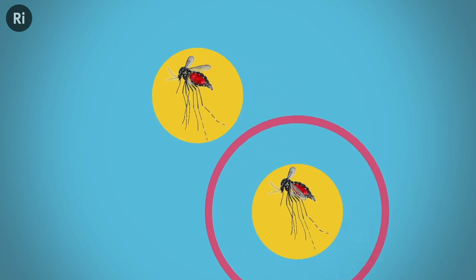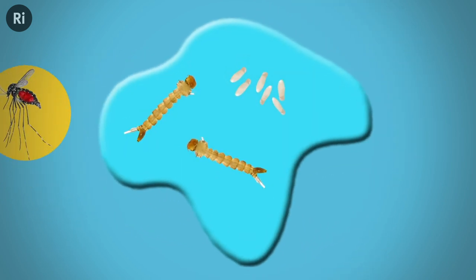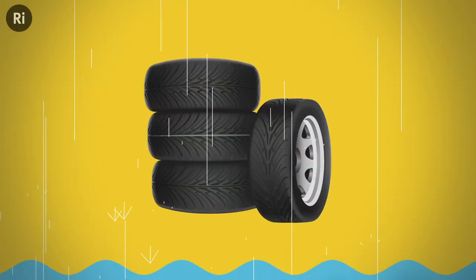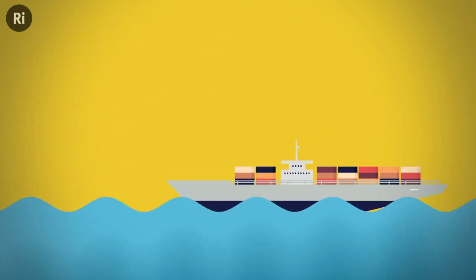Chikungunya virus is spread human to human via infected mosquitoes. These mosquitoes like to breed in small pools of water, which are found in shiploads of car tires as rainwater collects in them. So ships carrying tires also brought the mosquito that allowed the viral epidemic to take hold.